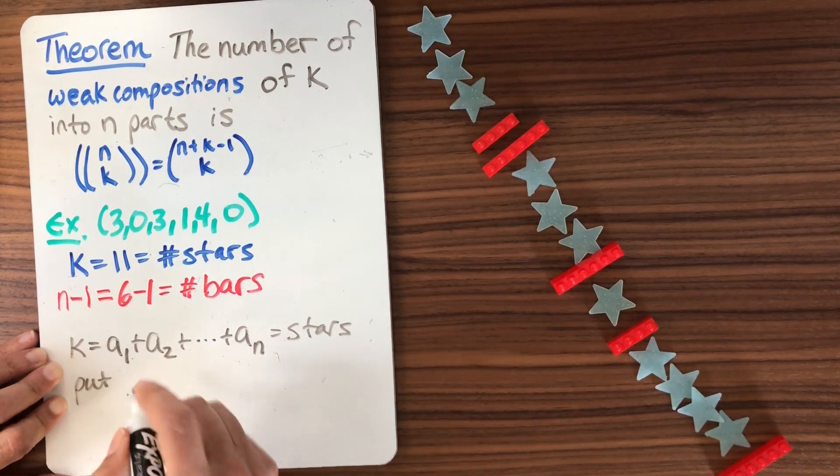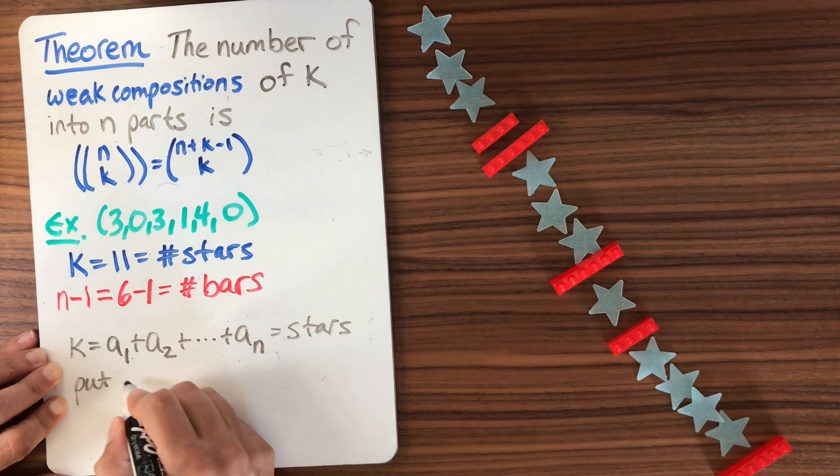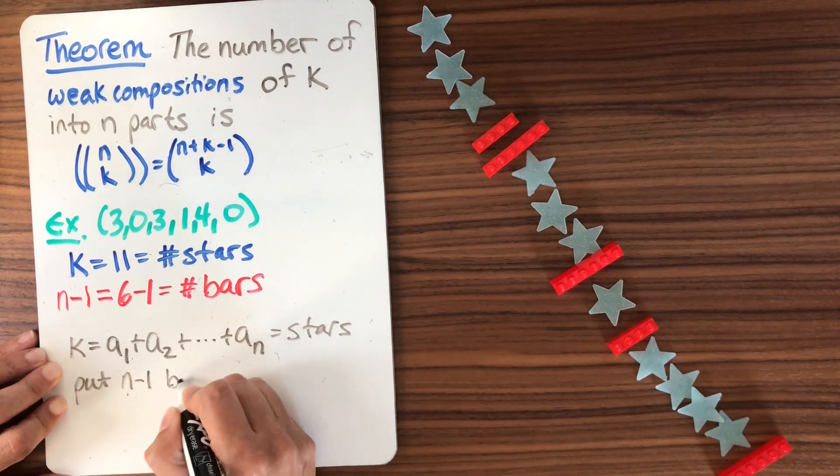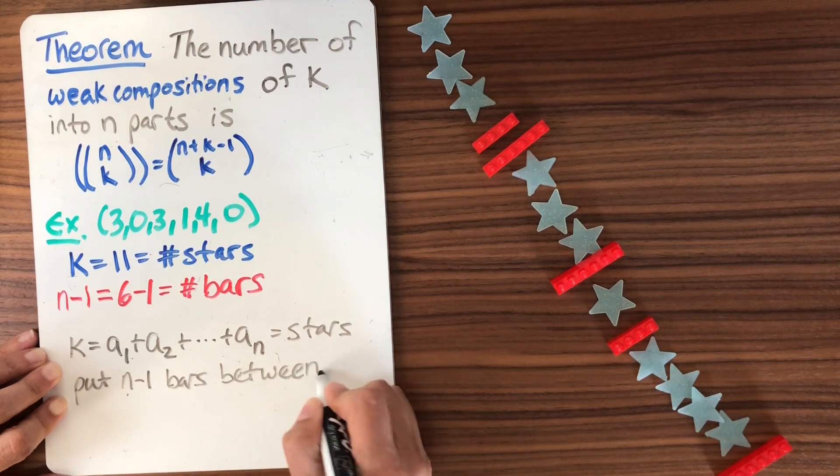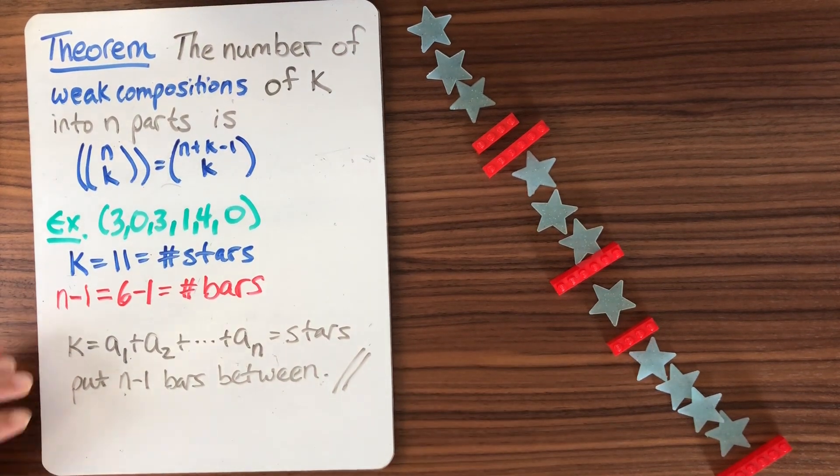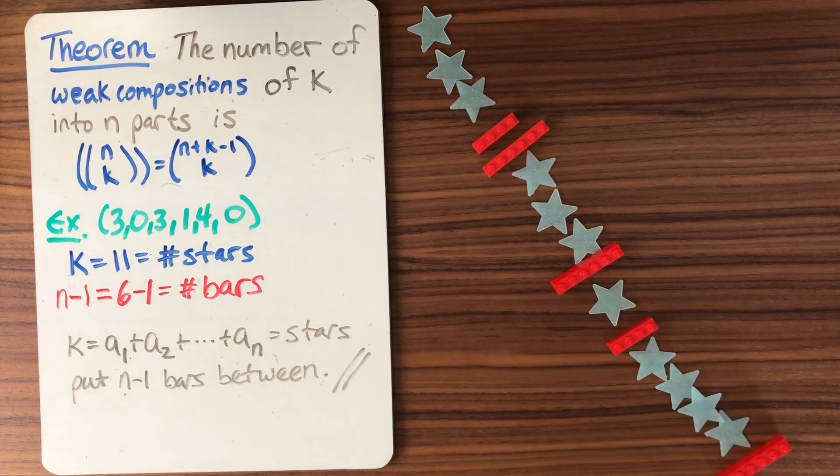And then you're going to put, since they're n terms, you're going to put n minus one bars between. And now the theorem follows just from the classic stars and bars counting.